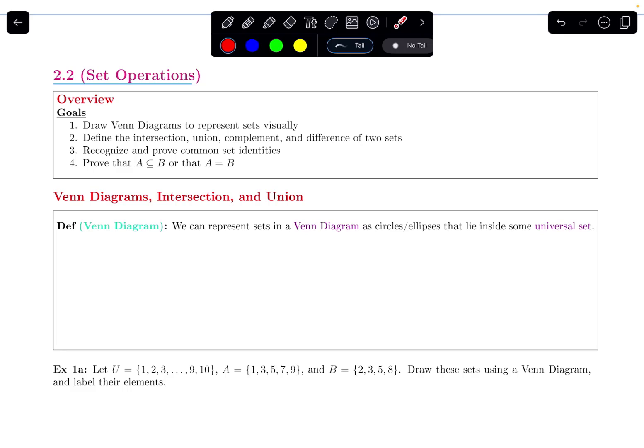We'll define the intersection, union, complement, and the difference of two sets. We'll talk about how we can recognize and prove common set identities, and how we can prove one set is a subset of another, or that two sets are equal to each other.